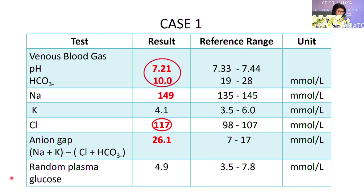The blood gas showed low pH and low bicarbonate — severe metabolic acidosis. Looking at the anion gap: sodium plus potassium minus chloride and bicarbonate — the anion gap was high. This indicates the body has unmeasured anions in the system. The difference being high means there are unmeasured anions present.